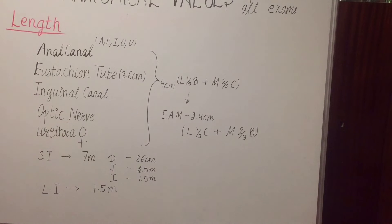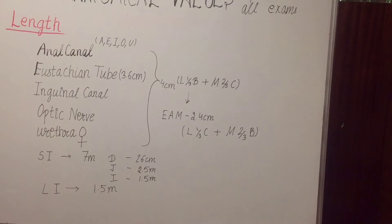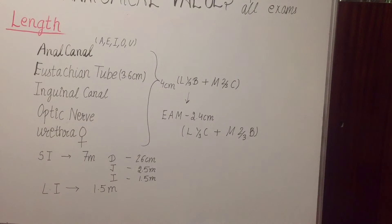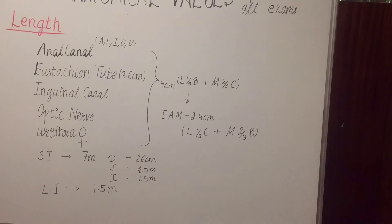The Eustachian tube is divided into two parts — bony and cartilaginous: laterally one third is bony and medially two thirds is cartilaginous. External auditory meatus length is 2.4 centimeter. It is also divided into two parts: cartilaginous and bony — lateral one third is cartilaginous and medial two thirds is bony. Don't confuse it with the Eustachian tube.